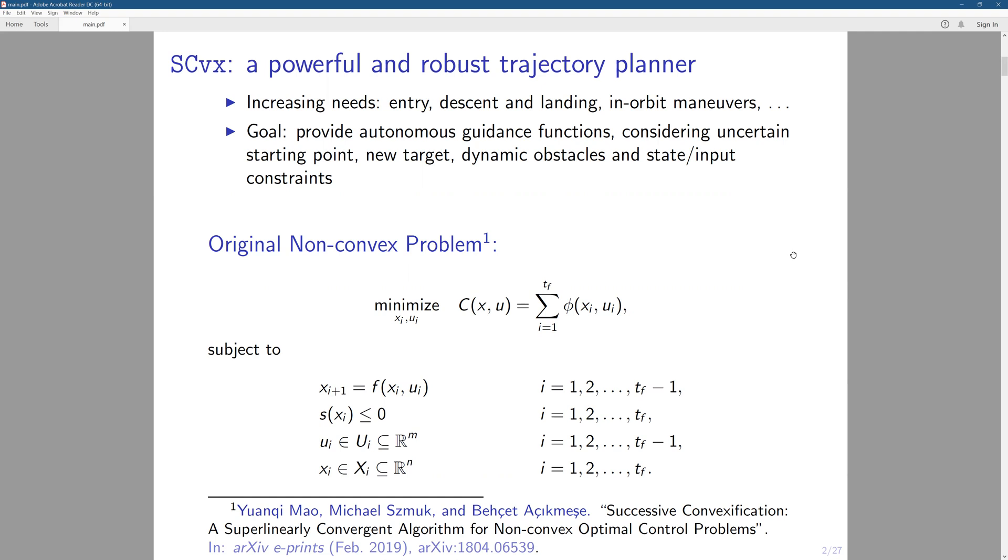So the problem formulation can be seen as this. This is a non-convex problem, which is a typical T-square time formulation. The F function here is the dynamics and the S function here represents the non-convex part of the state constraint. And we also have the convex part of the constraint which is written here as set inclusion constraints for the input variable U and the state variable X.